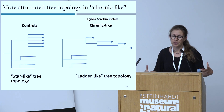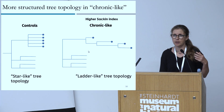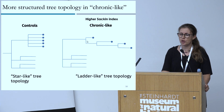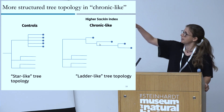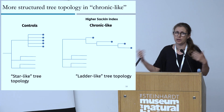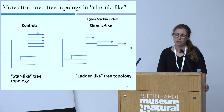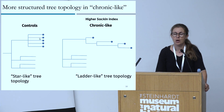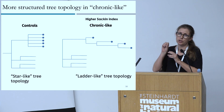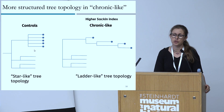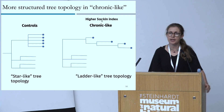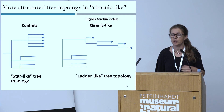Second, the trees are more structured. In the chronic-like set, the tree looks like a ladder — which is exactly what we expect when a virus is evolving inside a host; that's what HIV phylogenies look like evolving within a host. We expect controls to show a star-like topology, because in coronavirus transmission there is a lot of super-spreading, creating this explosion pattern in the tree. We measure something called the Sackin index, and we find a significantly higher Sackin index in our chronic-like set.